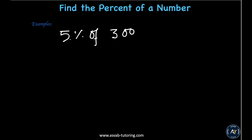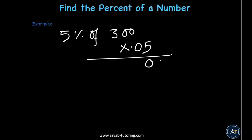Multiply 0.05 by 300. Forgetting about the decimal, that's 300 times 5. 3 times 5 is 15, giving 1500. After the decimal you have two digits, so move two decimal places — the answer is 15.